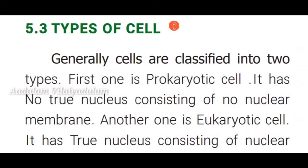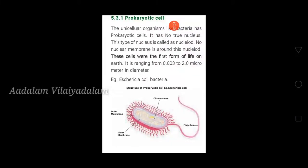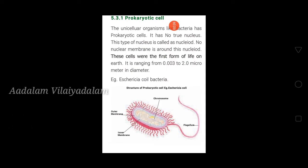Cells are classified into two types: prokaryotic cells and eukaryotic cells. Prokaryotic cells have no true nucleus — examples are bacteria and cyanobacteria. Eukaryotic cells have a true nucleus, and include plant cells and animal cells. Unicellular organisms like bacteria are prokaryotic cells — they have no membrane-bound nucleus; instead, the genetic material is called a nucleoid.